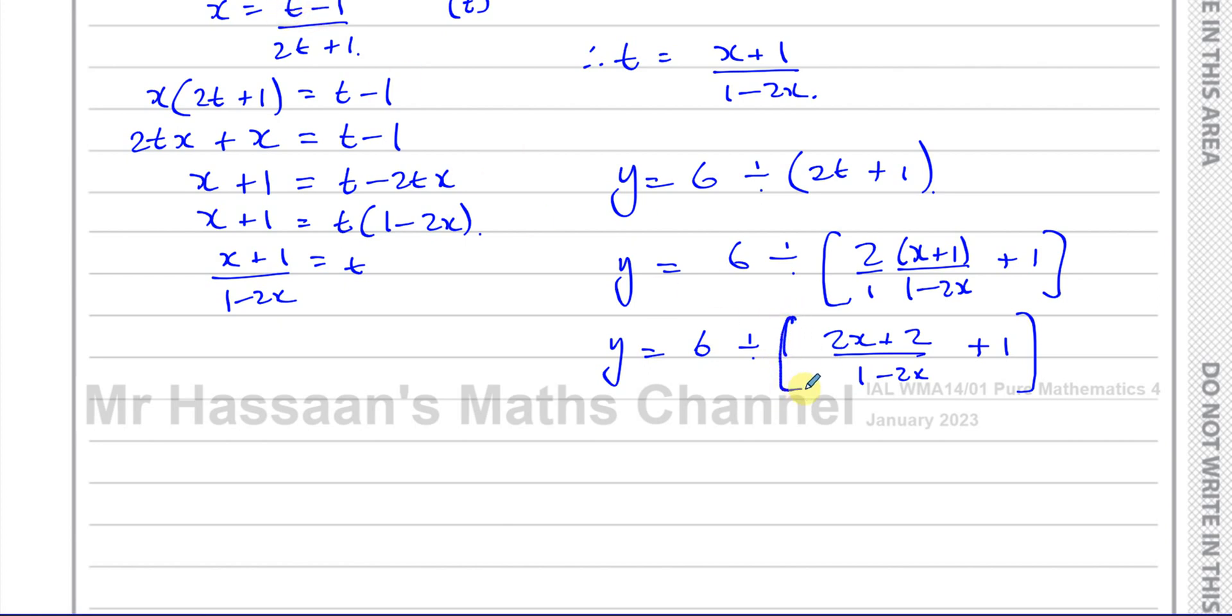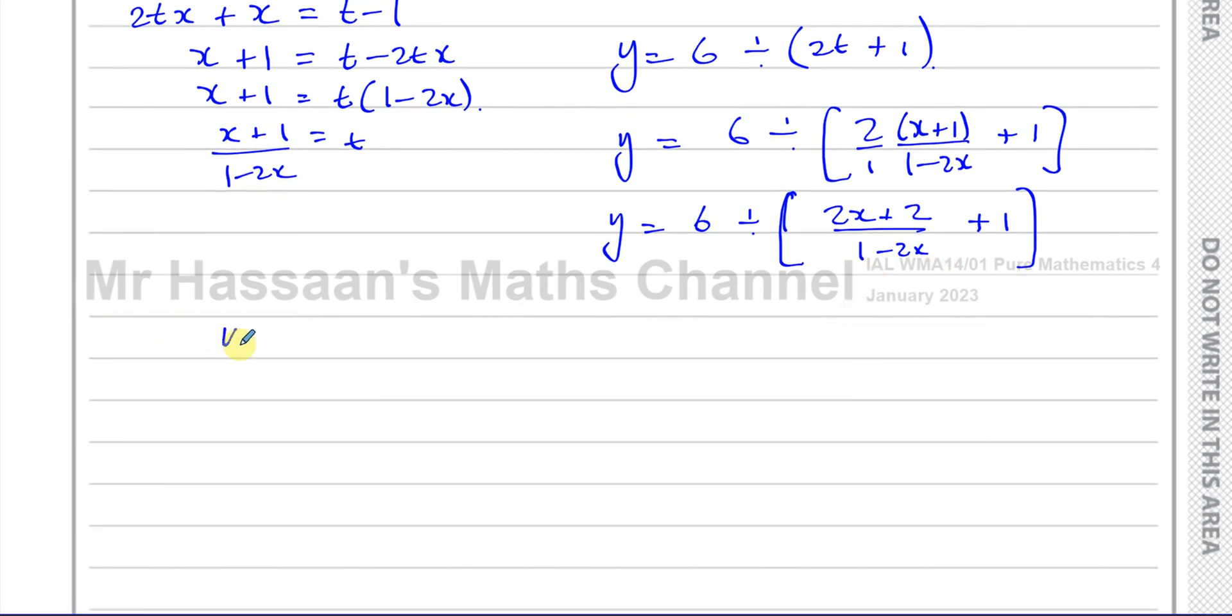So Y equals 6 divided by... when you're multiplying, this is like 2/1 times this fraction. You don't multiply 2 with both numerator and denominator. This gives you (2x+2)/(1-2x) and I've got plus 1. Before I deal with this division, I'm going to write this as one whole fraction. So I have Y equals 6 divided by (2x+2)/(1-2x) + (1-2x)/(1-2x), which simplifies to 6 ÷ 3/(1-2x).